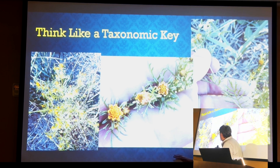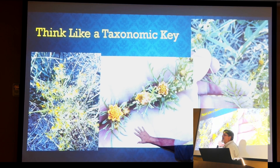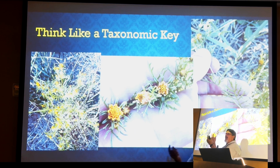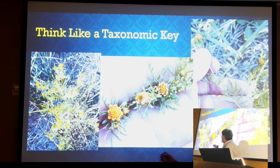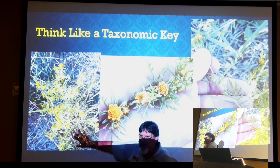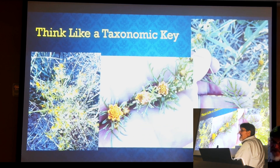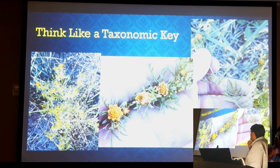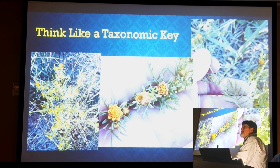iNaturalist uses only the first picture you upload for its AI identification, but you can change which picture it uses. I've done that before — I don't get a satisfactory answer with one photo, change it to another, and then all of a sudden it gives me an answer. I can then compare the photographs of that species and pick the right choice. So using your hand in pictures provides scale, which can be really valuable.